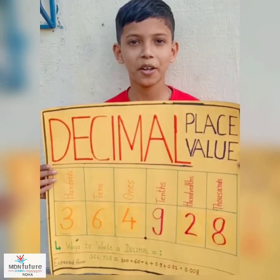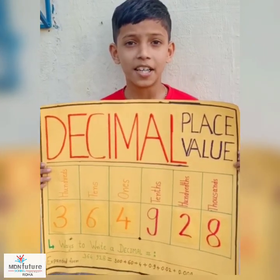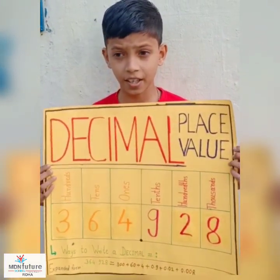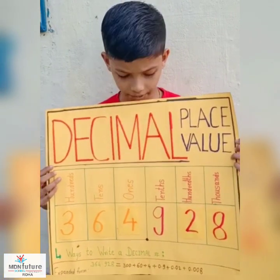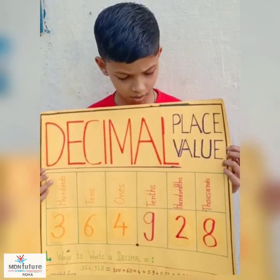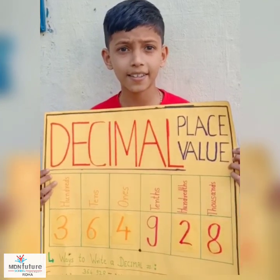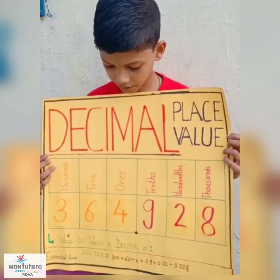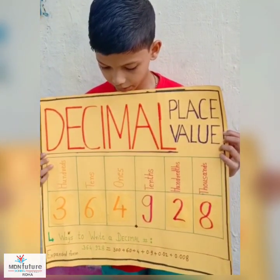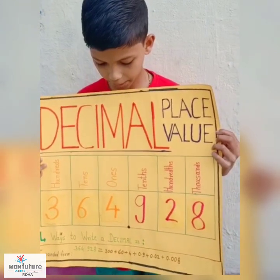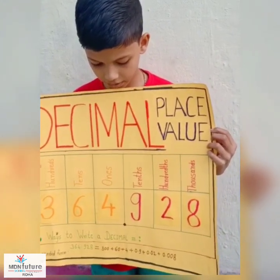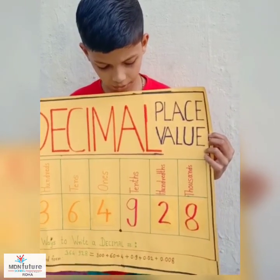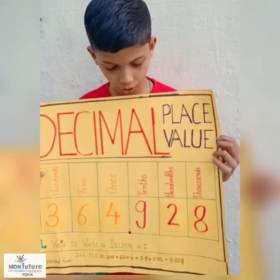Hello everyone, I am Smith. Decimal place value: three hundredths, six tenths, and four ones. Point nine tenths, two hundredths, and eight thousandths. Here's how to write a decimal in expanded form: 364.928 is equal to 300 plus 60 plus 4 plus 0.9 plus 0.02 plus 0.008. Thank you.